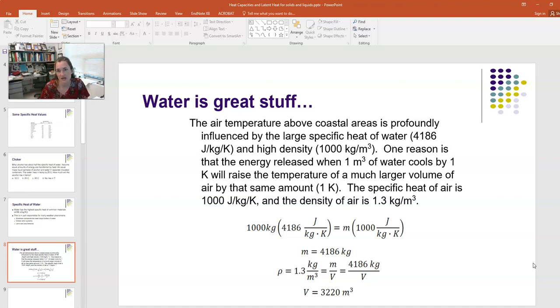Now we solve for M. The mass of air that is heated by one degree when the water loses one degree is 4186 kilograms. That's a lot, and that's because the specific heat of water is so much larger than that of air.